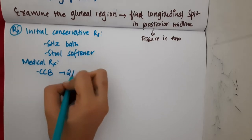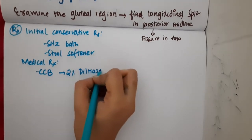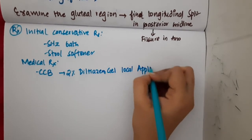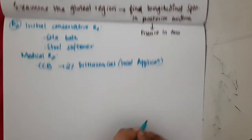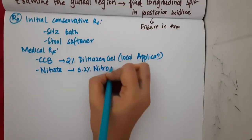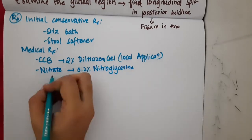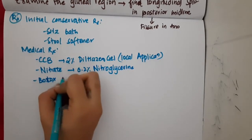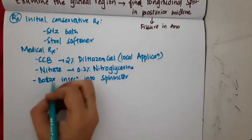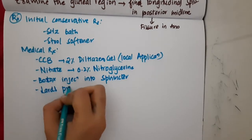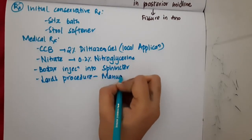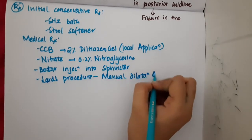In medical treatment, calcium channel blockers can be given — specifically, 2% diltiazem gel can be used in local application. Nitrates such as 0.2% nitroglycerin can also be used. Botox injections can also be put into the sphincter. Lord's procedure can be done, in which manual dilatation of the sphincter is performed.